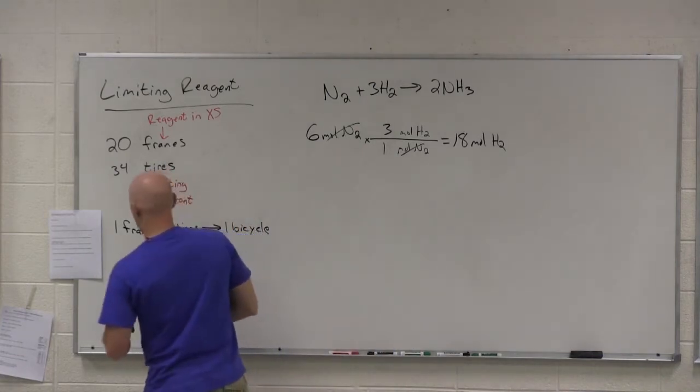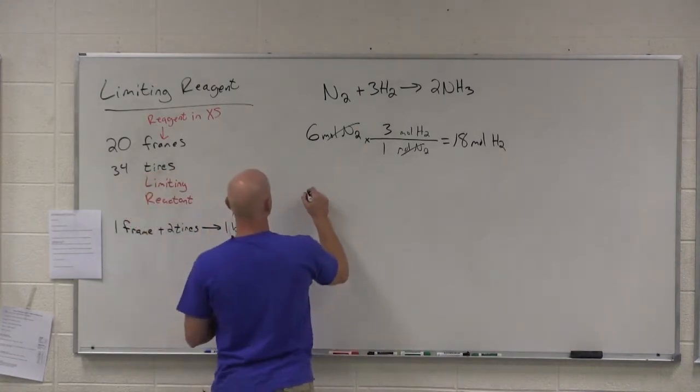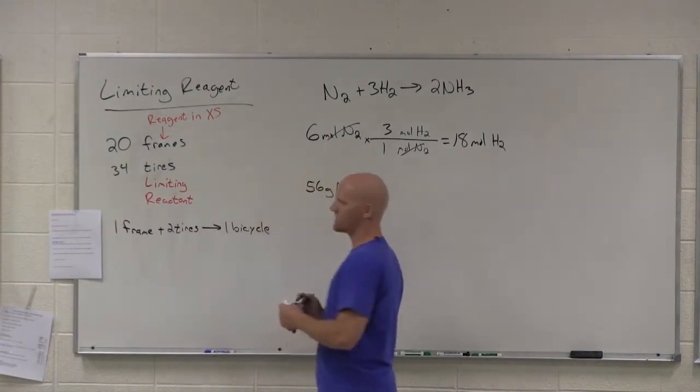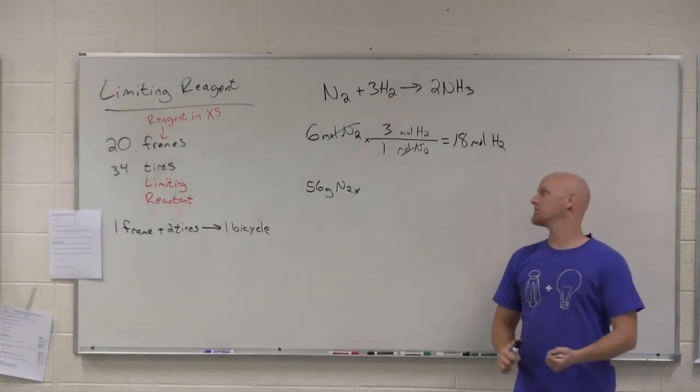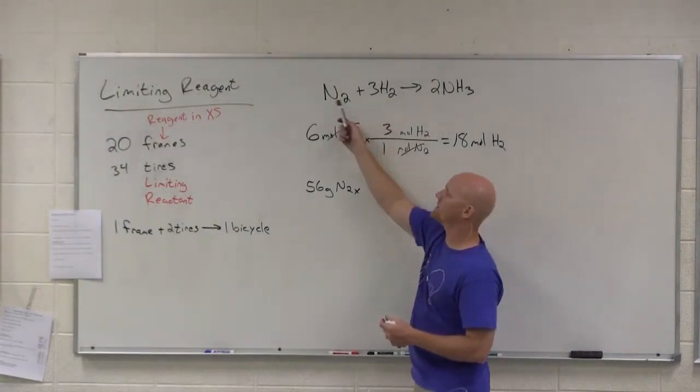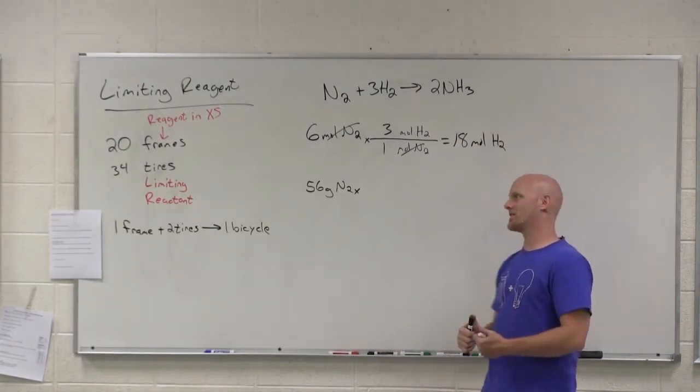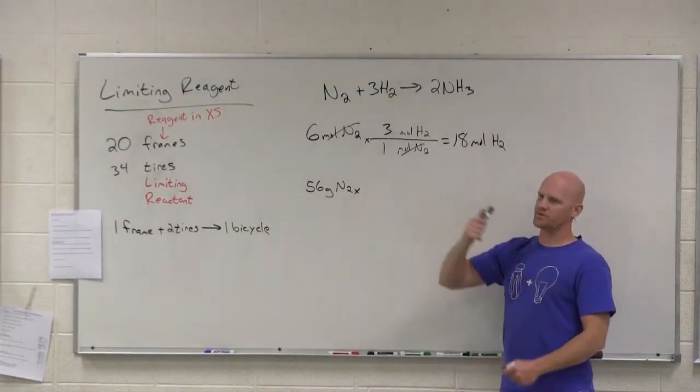Let's keep going with this. How many moles of hydrogen gas are required for 56 grams of nitrogen to react completely? Why is this harder? Because it's in grams. Notice this ratio of three to one is a ratio of moles, not grams.